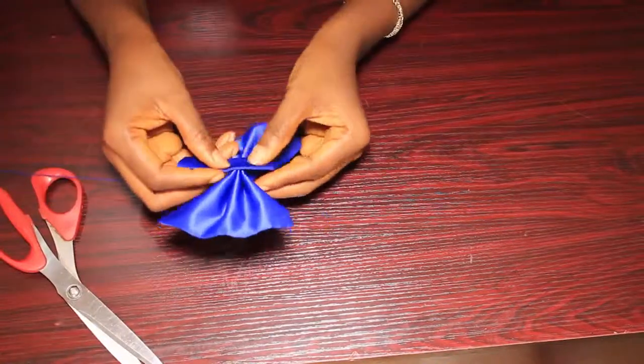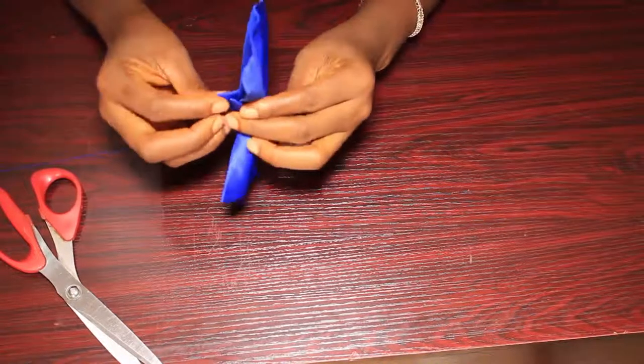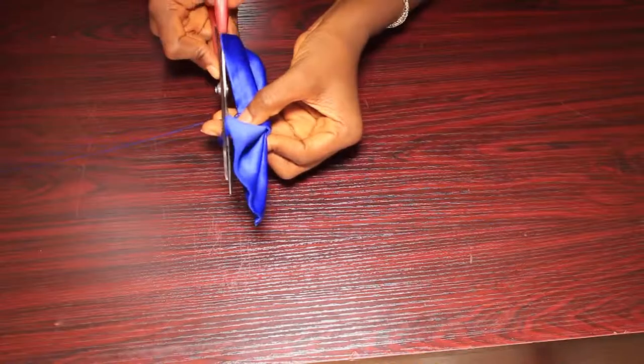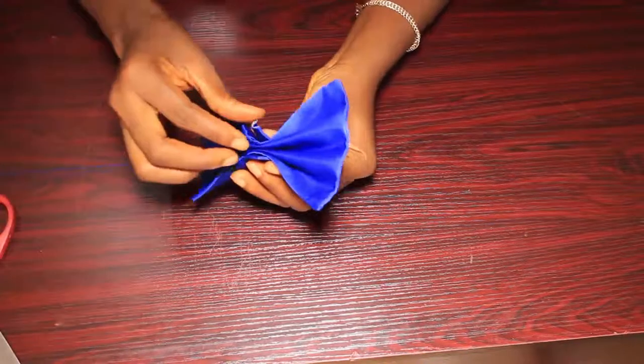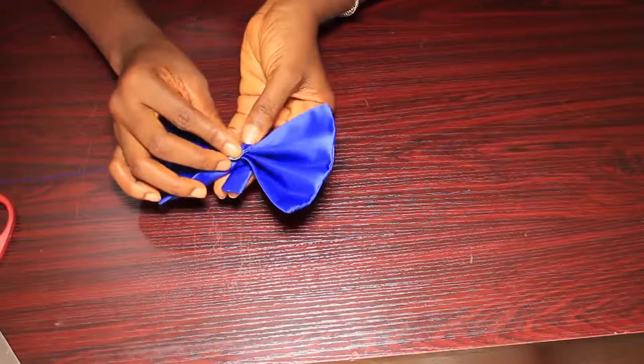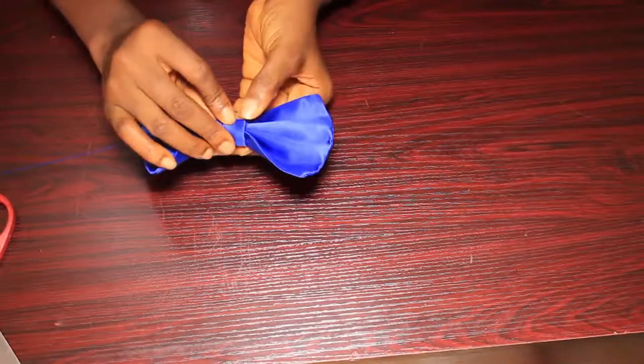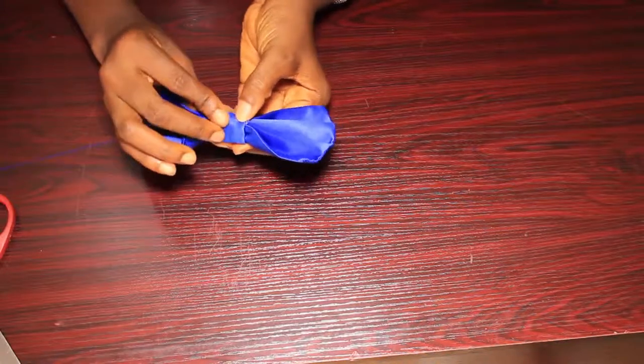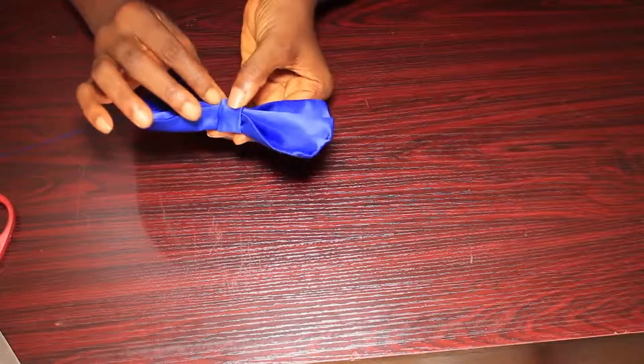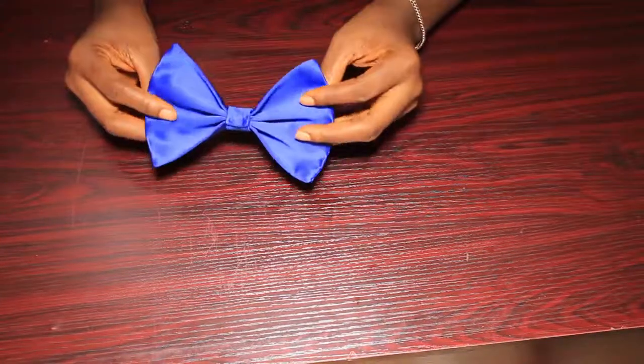I'm going to take the other fabric and wrap around this. This one is a little bit longer than what I need, so I had to cut off that other part so that it will be shorter. I'm wrapping it up and I'll use my needle to hold this together, and our bow is ready.